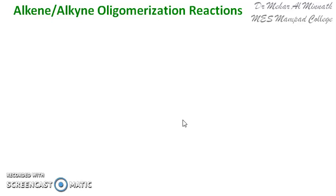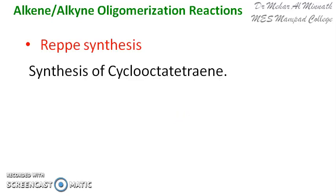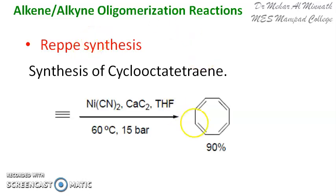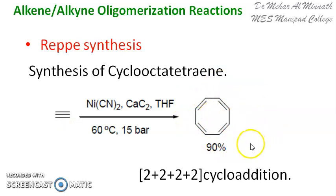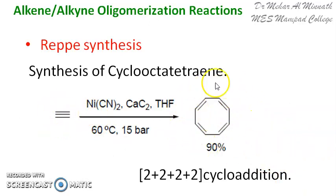Here we shall see the formation of cyclooctatetraene, and the synthesis is called REP synthesis or REPA synthesis. Cyclooctatetraene can be synthesized with the help of a nickel reagent. We are using acetylene as the substrate — four molecules of acetylene give one molecule of cyclooctatetraene. It is a type of [2+2+2+2] cycloaddition and you get an eight-membered ring system, so four monomers of acetylene come together to form a cyclic compound.